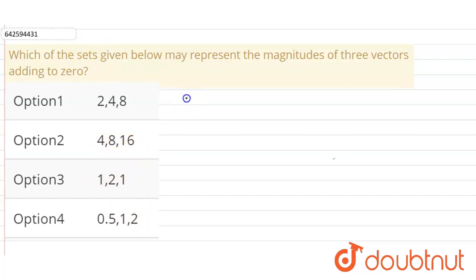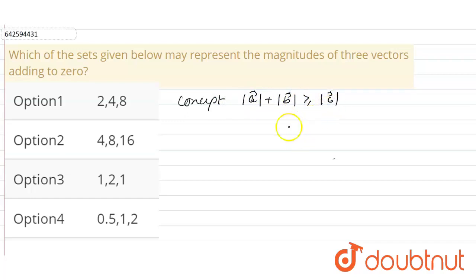The concept we will use is: the sum of the magnitudes of two vectors must be greater than or equal to the third vector — then only it will be possible that the sum of the three vectors comes to zero.